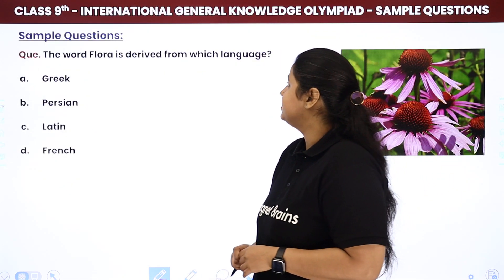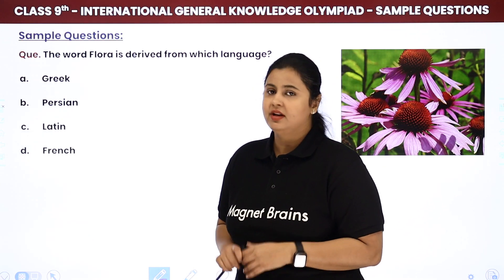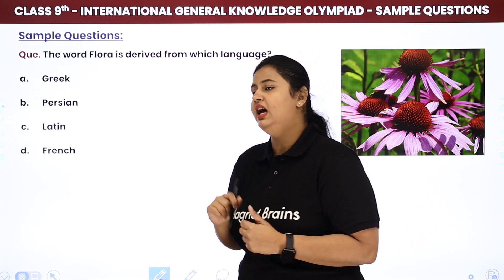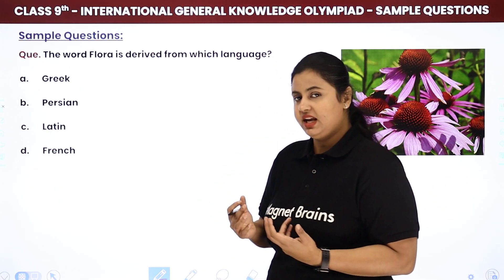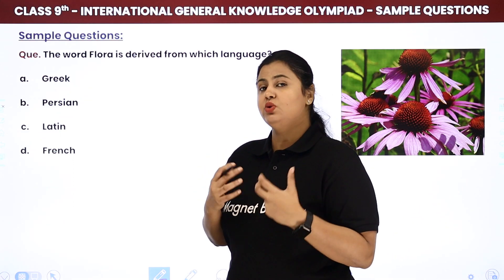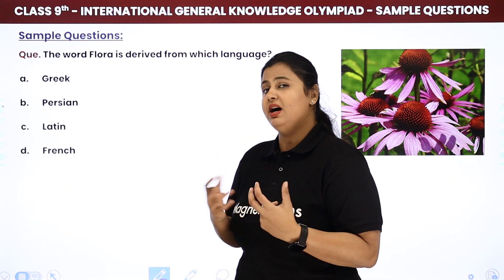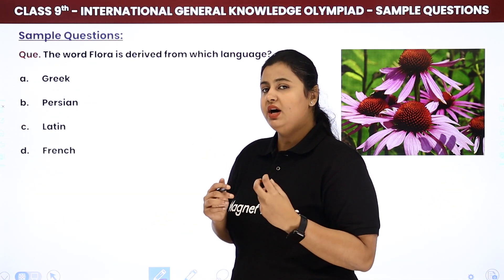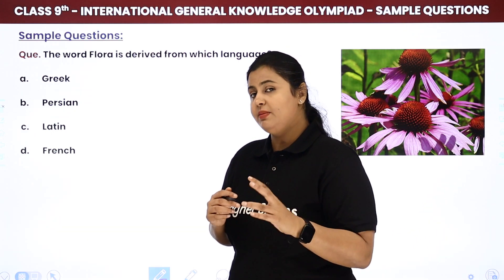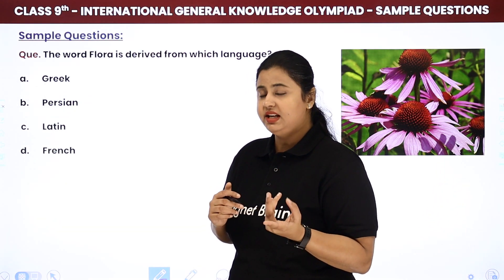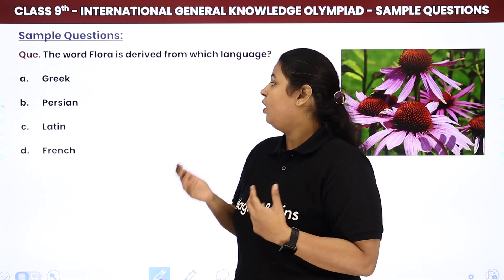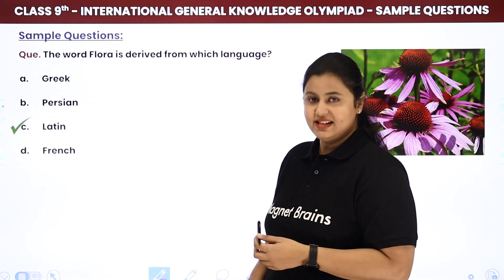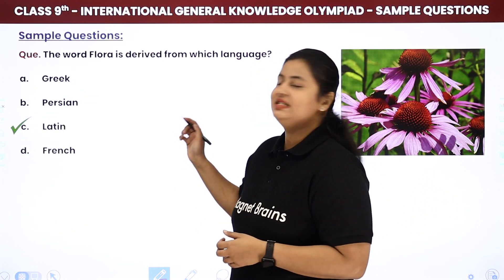The first question: the word flora is derived from which language? If you remember, we discussed this in the first topic — we talked about flora and fauna. Flora and fauna are very common terms you will hear a lot in school and in environmental contexts. The word flora means floral, pertaining to flowers. And this word is derived from Latin language. So the answer is C, Latin.